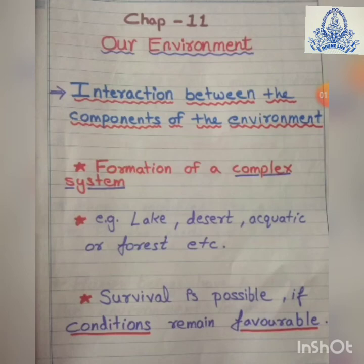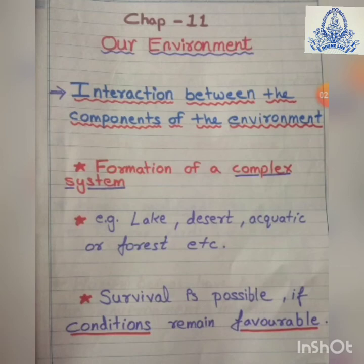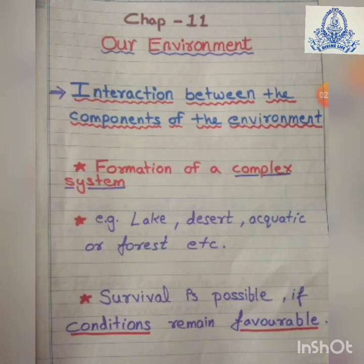Biotic factors are all living organisms within an ecosystem — these may be plants, animals, fungi, and other living things. Abiotic factors like soil, water, and air are important because they directly affect how these living components survive. Survival is possible only if conditions remain favorable. This means abiotic and biotic factors work together to create a unique ecosystem.